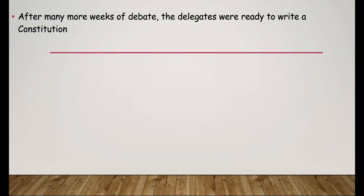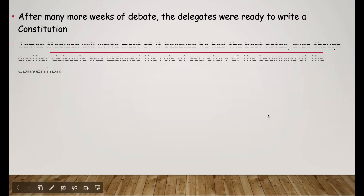In this lesson, we're going to talk about the ratification of the Constitution. To this point, we've talked about the disagreements and the compromises — first between the big and the small states over how many representatives, then it switched to north and south over the issue of slavery and whether or not slaves would be counted. Once they got through those, there were still more debates, but after a few more weeks, they're ready to write a Constitution.